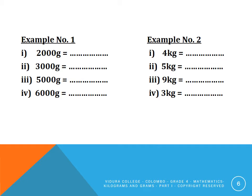Look at example number two. The first one is four kilograms. How many grams are there in four kilograms? The answer is four thousand grams. Five kilograms equals five thousand grams. Nine kilograms — the answer should be nine thousand grams. Three kilograms — the answer should be three thousand grams.